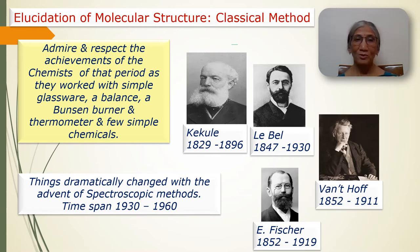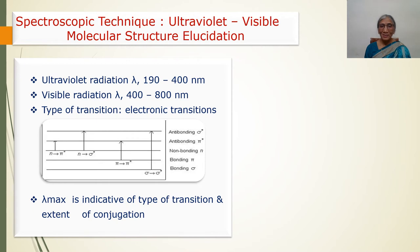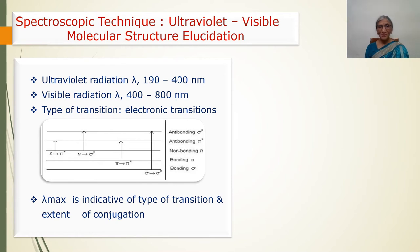After the development of spectroscopic methods during the period 1930 to 1960, things dramatically changed. Ultraviolet and visible spectroscopy: the ultraviolet region extends from 190 to 400 nanometers, and the visible region extends from 400 to 800 nanometers. Ultraviolet and visible radiations possess sufficient energy to bring about electronic transitions in the molecule. Various types of electronic transitions include sigma to sigma*, pi to pi*, n to sigma*, and n to pi*.